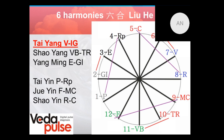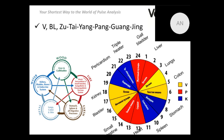The bladder works in pair with the kidney channel, and together they represent the water element. They manage our body fluids and everything connected with water. Water is characterized by dynamic movement — it moves fast. The same characteristic applies to the bladder channel.